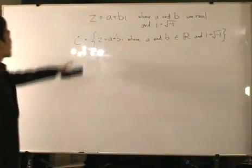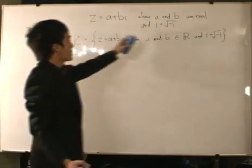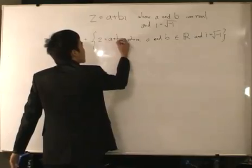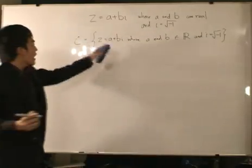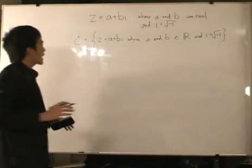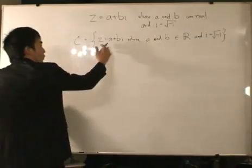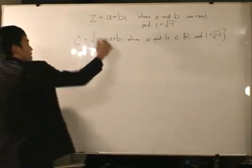That's formally what the complex numbers mean, that A and B are real, and i is the imaginary number. So, as you can see, any complex Z, you can kind of break it down into its real number, real component, which is A, and its imaginary component, which is B.